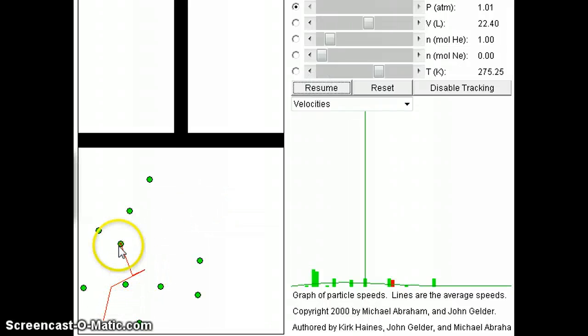To answer the question that we were asking earlier, which is why is it that a gas doesn't reach a particular location faster than it does in reality, the reason is because there are other gases that are present. A gas like this red one here is not traveling on its own in this container.